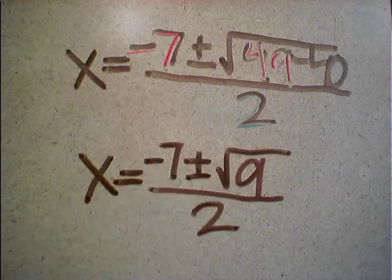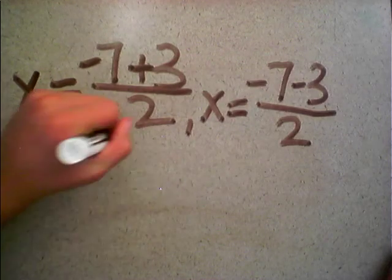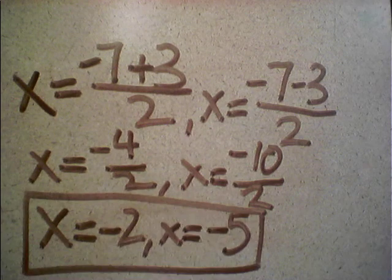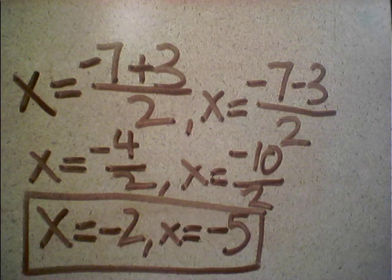We simplify it to get it down to a smaller number and keep on simplifying until you can split it up in two, where x equals negative 7 plus 3 over 2, and x equals negative 7 minus 3 over 2. We did that because we want to create two separate equations of the adding and the subtracting.